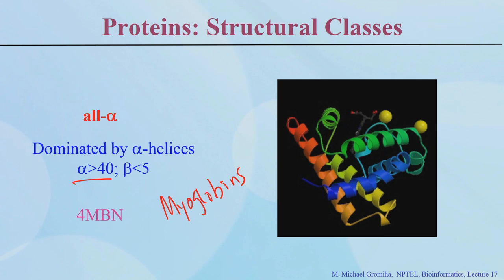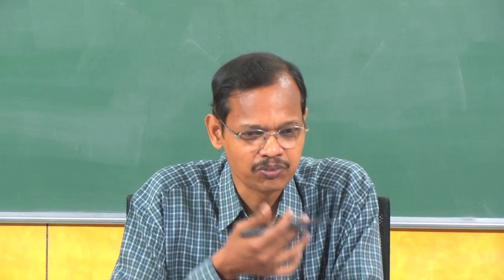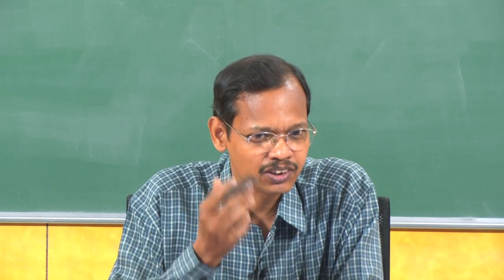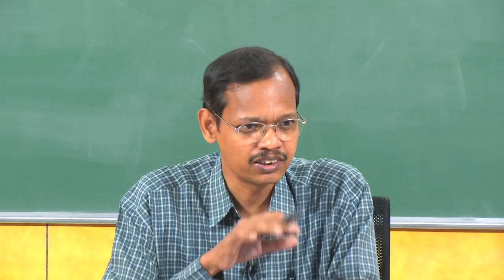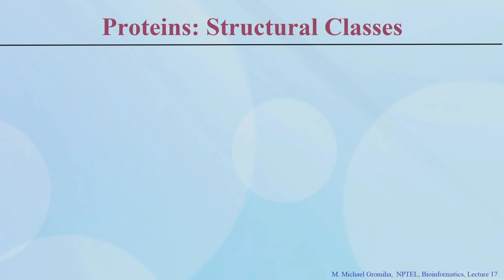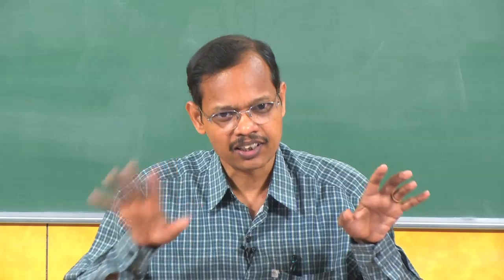All-alpha proteins are popular because the first solved globular protein structure contains alpha helices. Membrane proteins also fall here - the first solved membrane protein structure, the photosynthetic reaction center, also contains several alpha helices. The second class is all-beta proteins, which are predominantly beta strands - more than 40 percent beta strands and less alpha helices. Concanavalin A is an example.